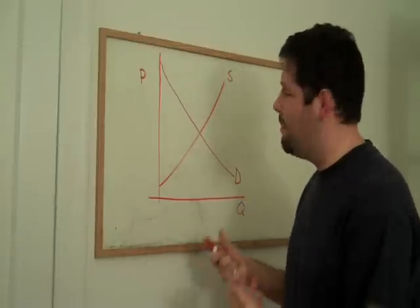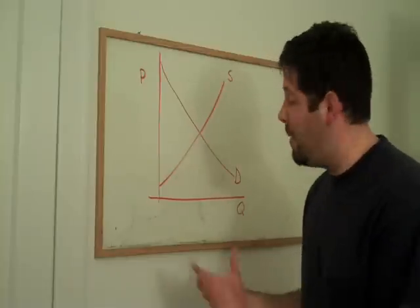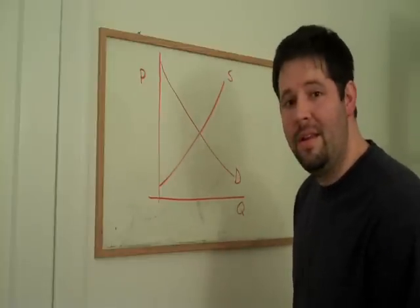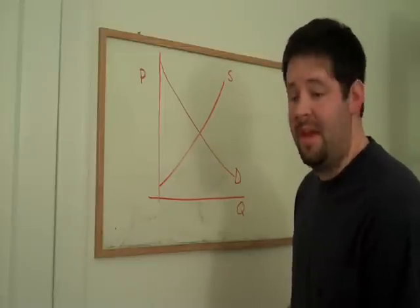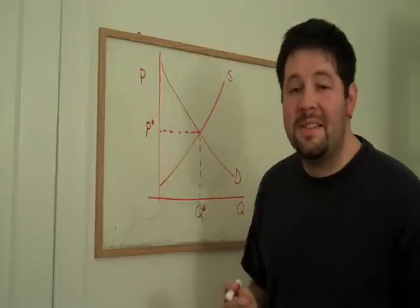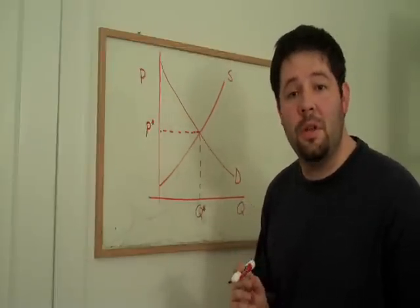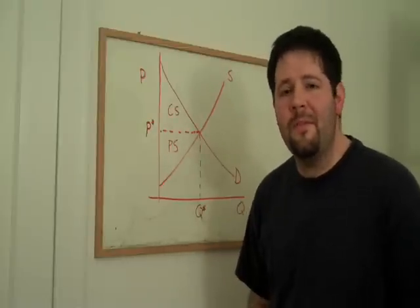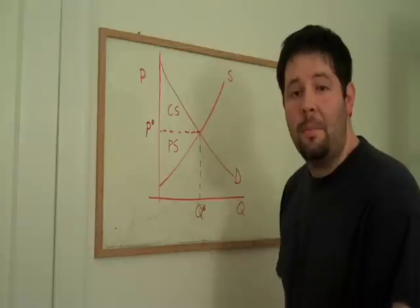So let's consider a domestic industry. This supply and demand graph represents the domestic supply and demand for a product that has a world market. This would give us a domestic price and quantity, and as we discussed in the previous couple of videos, this would give us consumer surplus and producer surplus. What are the ramifications for opening this economy up to trade?